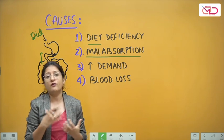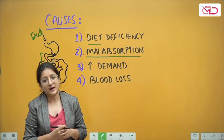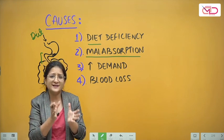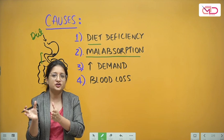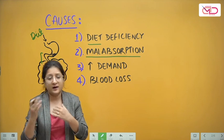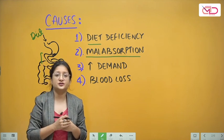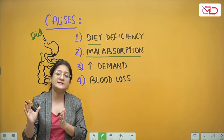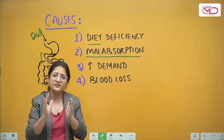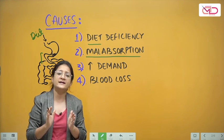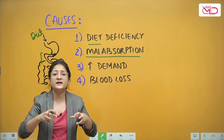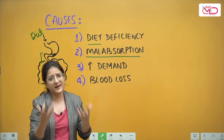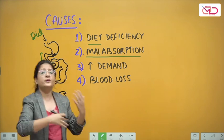Certain dietary habits can lead to a greater propensity for iron deficiency anemia. Maintaining complete vegetarianism, or even when eating an entirely vegetarian diet, if your diet is not consisting of good vegetable sources of iron, then over a period of time iron deficiency can set in.